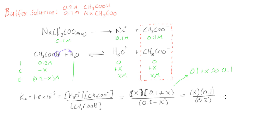If we want, we can say that X is going to be equal to—well, if we just rearrange this, it would be 0.2 times 1.8 times 10 to the -5 all over 0.1.